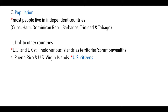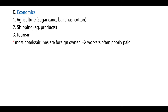The United Kingdom also holds some islands as territories, such as the British Virgin Islands. The Bahamas and Jamaica are technically tied to Britain but are self-governing. Agriculture is very important economically — sugarcane, bananas, and cotton are among the more important crops.